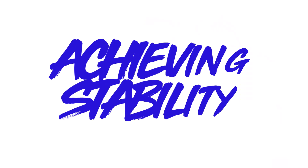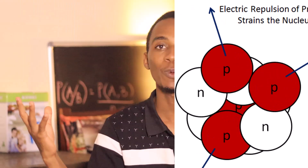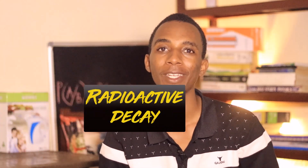Well, it all boils down to one thing: achieving stability. At the heart of every atom lies a battle — a battle between the strong nuclear force, which holds the protons and neutrons together in the nucleus, and the electromagnetic force, which tries to push the protons apart since they are of the same charge. To maintain balance, atoms undergo various processes to become more stable. One of those processes is radioactive decay.